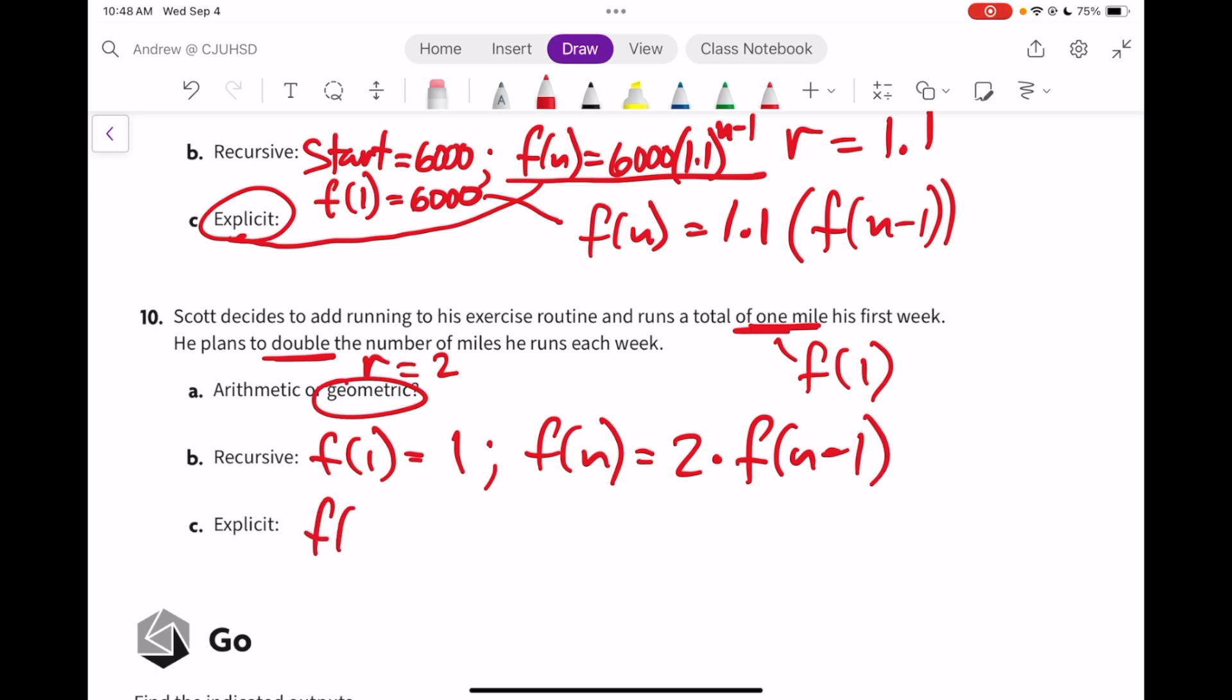Explicitly, that's f(n) equals the beginning number, 1, times the ratio of 2 to the n minus 1. Or more likely you're not going to see it written with the 1. It'll just be 2 to the n minus 1.